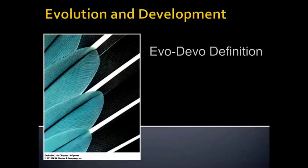The topic for Unit 3.3 is evolutionary developmental biology, also known as evo-devo. It's a rather new field that combines both classical embryology and the study of ontogeny with modern molecular work and new techniques that allow us to visualize development at the molecular level. We'll be looking at all those elements today.